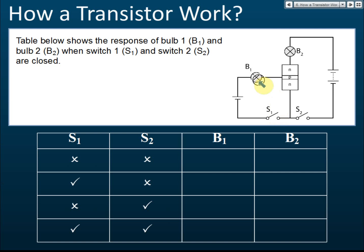So the answer is no — B1 does not light up. Switch two, S2, is also off — open means it's off. What happens to B2? Will it light up? No, because the circuit is not complete, so no current flows.